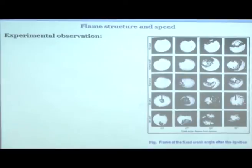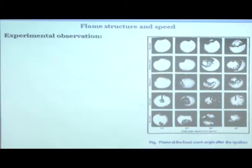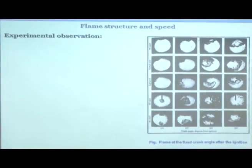The flame speed with center ignition is much faster compared to any of the side-ignition cases. People also explored two points of ignition — two sparks side by side. At 20 degrees the two flame fronts are colliding, and at 25 degrees the entire charge is engulfed. These were some interesting experiments from earlier research.